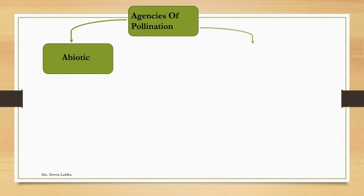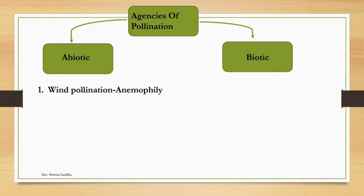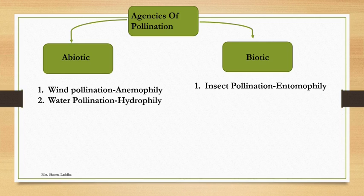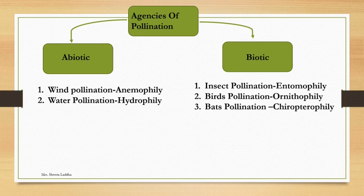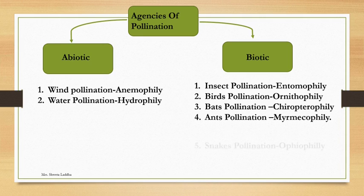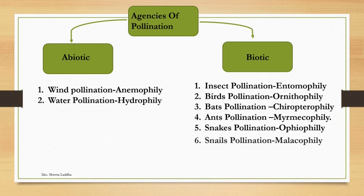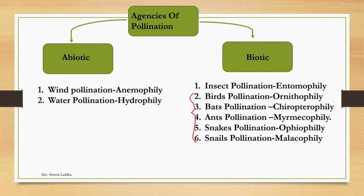There are different agencies of pollination: abiotic (non-living) and biotic. Abiotic agencies include wind pollination (anemophily) and water pollination (hydrophily). Biotic agencies include insect pollination (entomophily), bird pollination (ornithophily), pollination by bats (chiropterophily), by ants (myrmecophily), by snakes (ophiophily), and by snails (malacophily). We have studied all these in detail in theory.